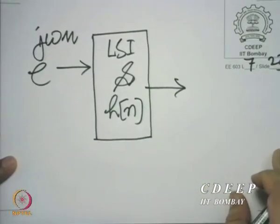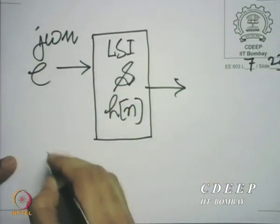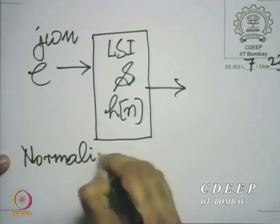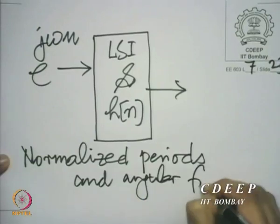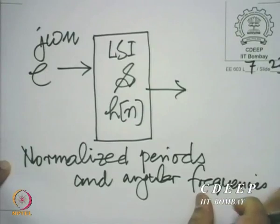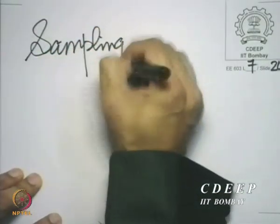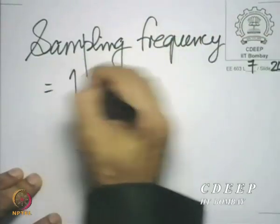A few remarks about the angular frequency omega. Henceforth, we are going to use what are called normalized periods and frequencies. What we mean by that is we shall assume that the sampling frequency is one unit — the unit is our choice. If it is 10 kilohertz, we say 10 kilohertz is one unit; if it is 1 megahertz, we say 1 megahertz is one unit. So the sampling frequency is the unit frequency, and therefore the sampling period is also one unit — it is the reciprocal of the frequency.